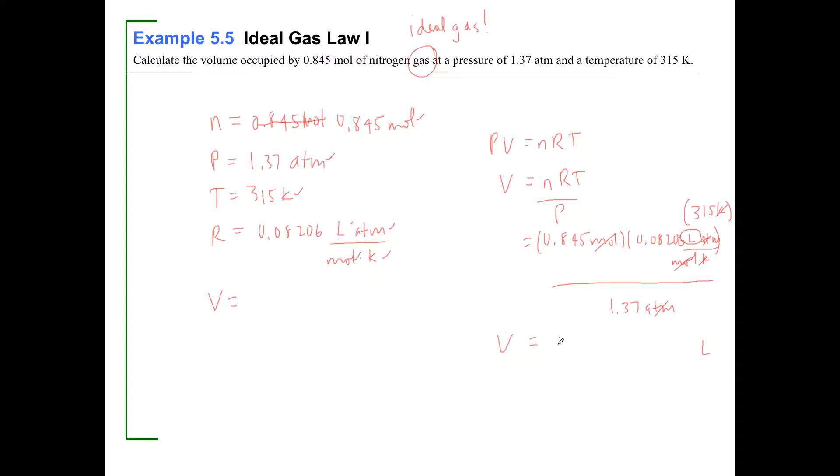0.845 times 0.08206 times 315 divided by 1.37. 15.943 liters. Now I have 3 sig figs here, 3 sig figs here, 3 sig figs here, 4 sig figs here. So this is going to be 3 sig figs. My volume is going to be 3 sig figs, 15.9 liters. And you know what, I don't really have any good way of evaluating if this makes sense or not. I guess if the pressure was on, I would probably recalculate this and do it a second time. But the pressure's not on right now. So let's assume that that's right. I was pretty careful when I set that up. Let's move on to the next problem.